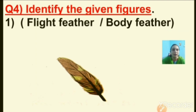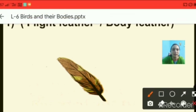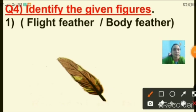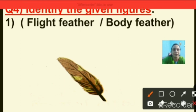Question number four: identify the given figures. One picture is given and you have to identify it from two options. First one — options are flight feather and body feather. The answer is flight feather, so I am putting a tick on flight feather.